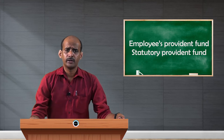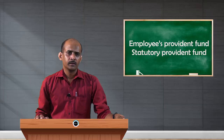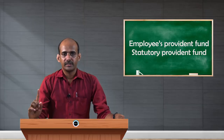In India there are five types of Provident Funds to meet the needs of employees of different sectors. Those five types are: first, Statutory Provident Fund; second, Recognized Provident Fund; third, Unrecognized Provident Fund; fourth, Public Provident Fund; and the last one, Approved Superannuation Fund. In this video I will take up the first type, that is the Statutory Provident Fund.